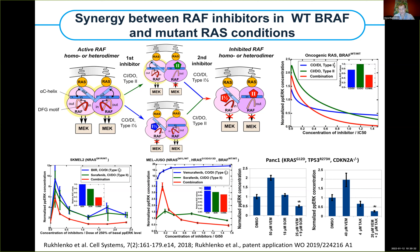If we take an alpha-C-in inhibitor like sorafenib or newer inhibitors, this is exactly the conformation they prefer — allowing two different molecules to inhibit the same dimer. Simulations show that combining these two inhibitor types gives a phospho-ERK response where less dose achieves better effects. In experiments across RAS mutant melanoma and pancreatic cancer cell lines, in all cases the combination curve shows that combining inhibitors works better. Taking high doses individually versus half doses in combination, we still see better effects — this is synergy.